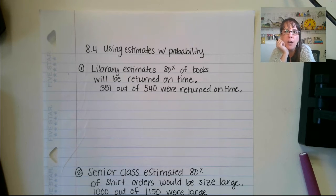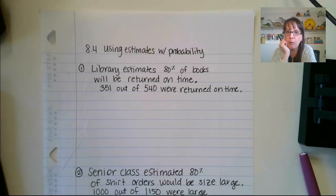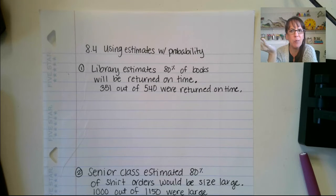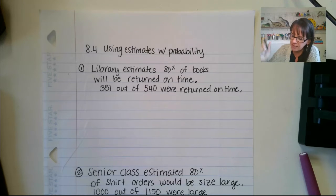So for the first one here, a library estimates that 80% of books will be returned on time. 351 out of 540 were returned on time. So we want to know, is this a good estimate? Let's figure it out.